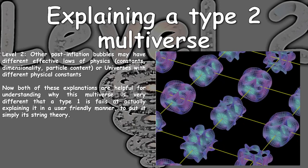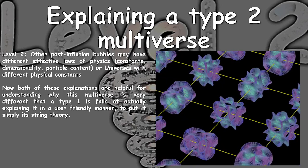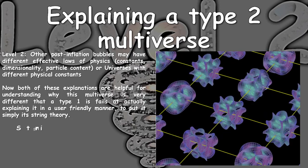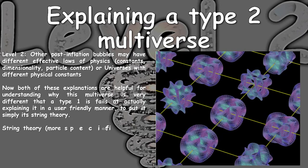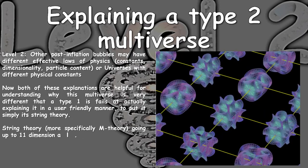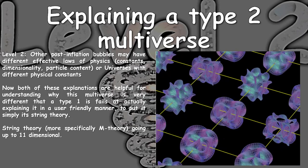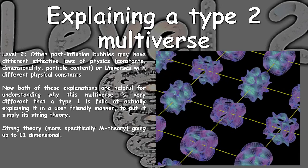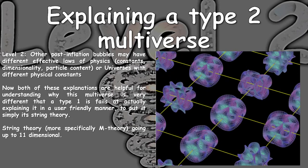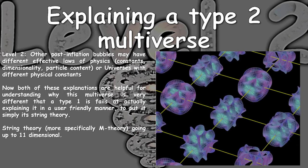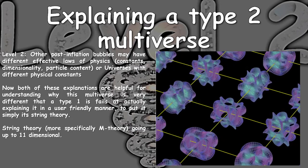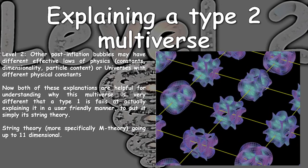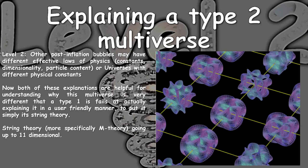A Type 2 multiverse is basically string theory, for those people who want to know. String theory, more specifically M-theory, is going to be up to 11 dimensional. A Type 2 multiverse can be really any finite dimensional, but the specific example given in the Tegmark paper is 11 dimensional.